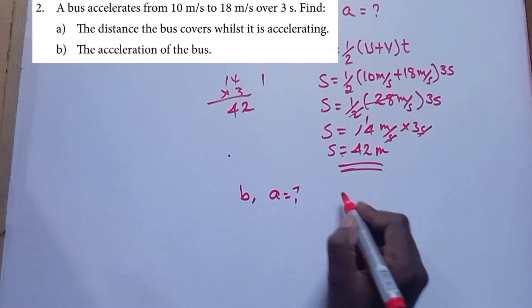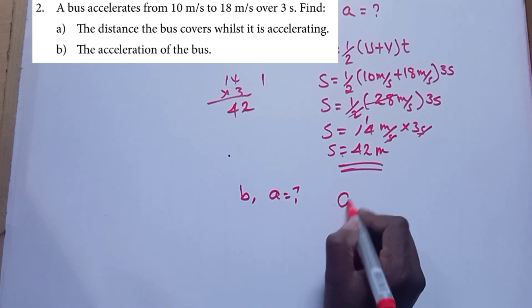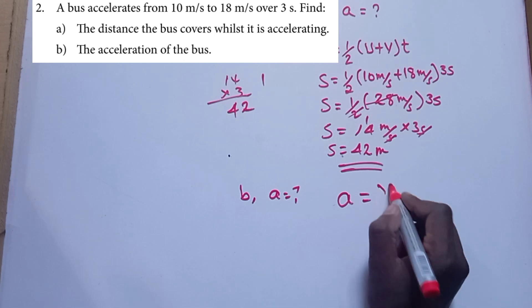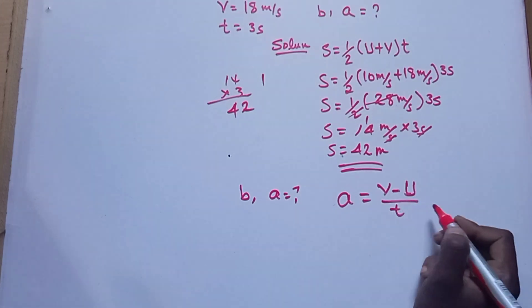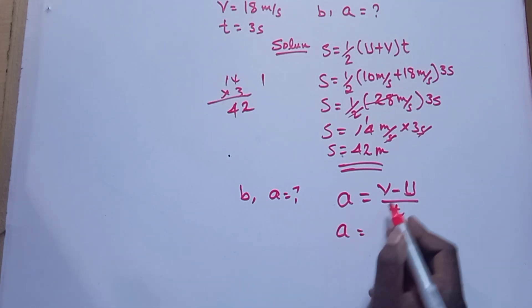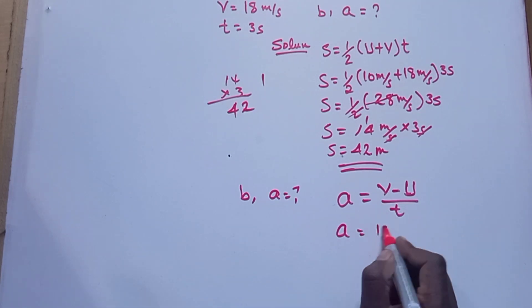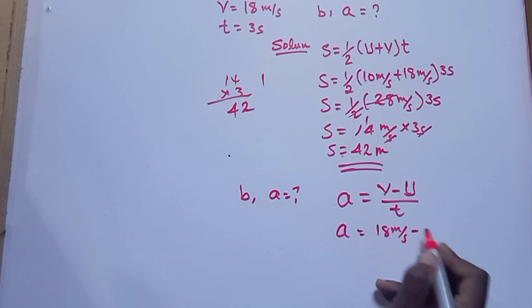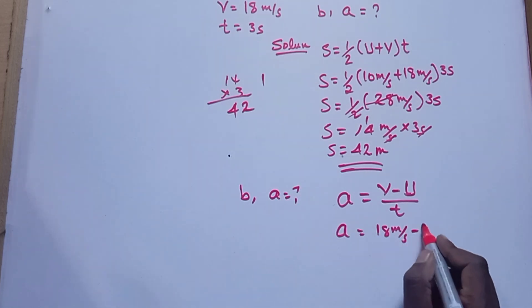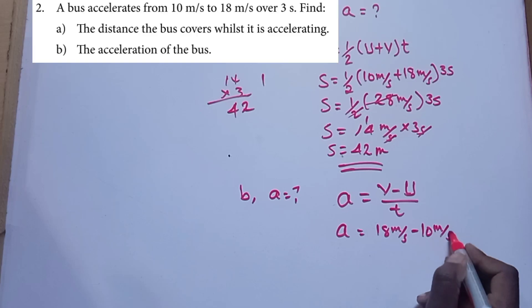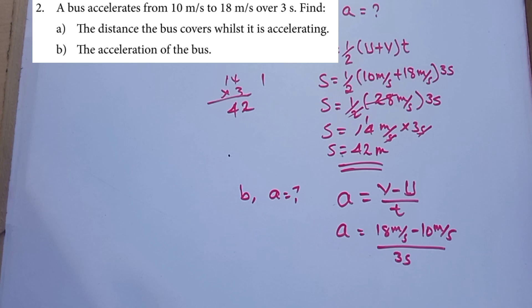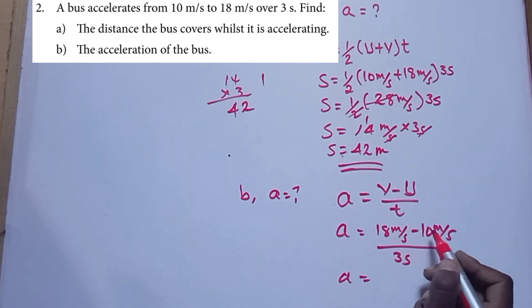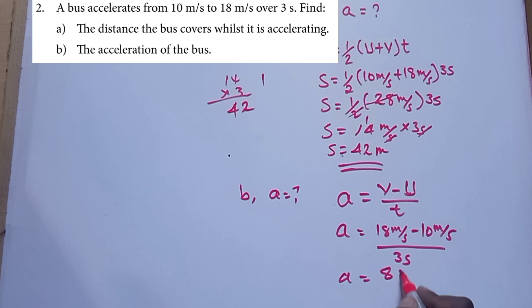For part (b), acceleration is equal to final velocity minus initial velocity over time. Acceleration is equal to final velocity minus initial velocity, divided by time.